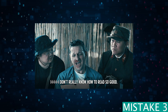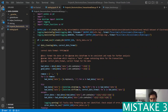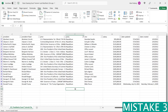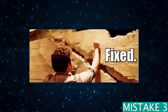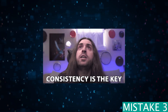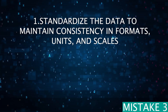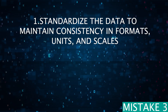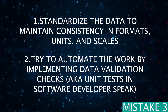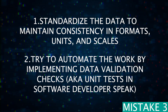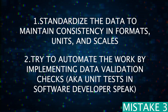What if you can't even read the data? This is a common issue because data quality can be inconsistent — you might have different date formats or different case usages, making analysis very difficult. The fix is to make your data format consistent by standardizing the data in terms of format, units, and scale. You can also automate the work by implementing data validation checks, similar to how software developers implement unit tests for their features.